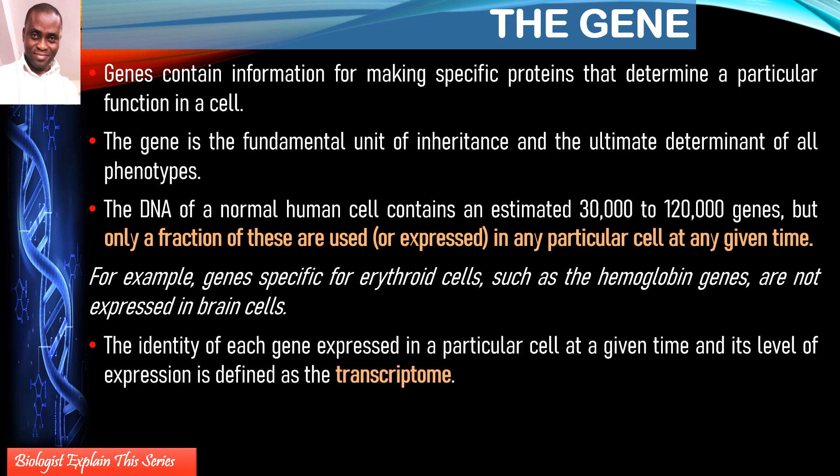Genes are not expressed equally in all cells. Different genes are active in different parts of the body. For example, the genes for hemoglobin protein are not active in brain cells. I encourage you to Google this and get back to me — I deliberately did not explain it, as it is part of your learning.